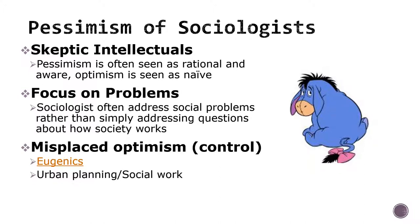Less deadly, but certainly creating unintended consequences, was sociology's emphasis on social work and urban planning as a way of optimistically improving society. While both of these endeavors have met with some measure of success, especially in community-oriented work, a lot of these efforts were co-opted by government and political entities who used them as a means of social control and containment, especially of more vulnerable populations.